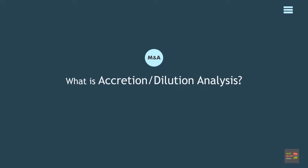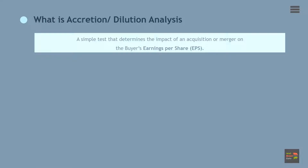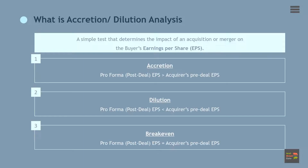What is M&A accretion dilution analysis? Accretion and dilution analysis refer to a simple test that determines the impact of an acquisition or merger on the buying firm's earnings per share. An accretive acquisition or merger is one where the pro-forma, or post-deal, earnings per share is greater than the acquirer's EPS before the deal is made.